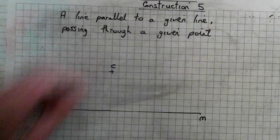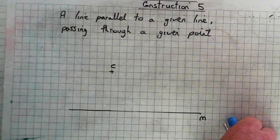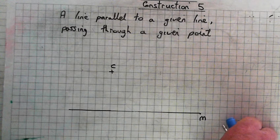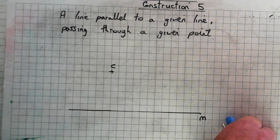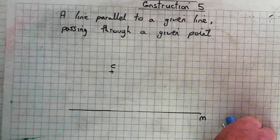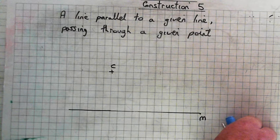So we need a line going parallel through that. Number one: draw a line through the point C to the line m. Label the intersection of these two lines.